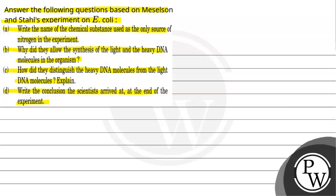So, question meh bola hai, that joh Meselson and Stahl ne experiment kara tha E. coli pe, uski basis pe hameh following questions joh hai, answer karne hai. So, sabse pehle bola gya hai, a part meh, that hamii chemical substance joh use kiya tha, for the, as the only source of nitrogen, usko bata na hai. Part B meh bola hai, why did they allow the synthesis of light and heavy DNA molecules in the organism? C meh bola hai, that inhohne heavy DNA molecules ko light DNA molecules se kaise distinguish kara. And joh D part meh bola hai, ki conclusion kya aya tha, moh bata na hai.